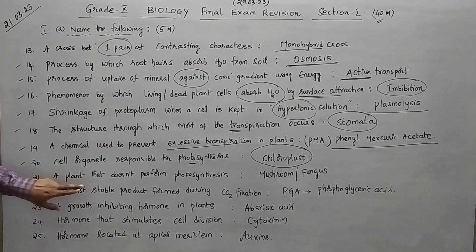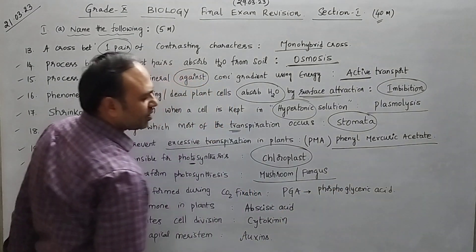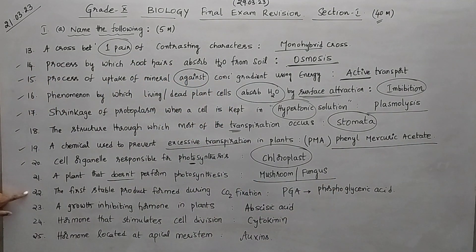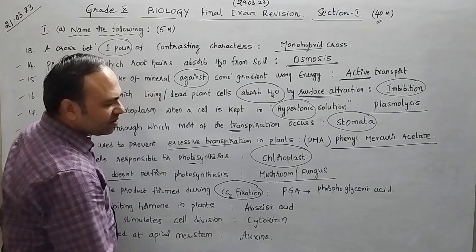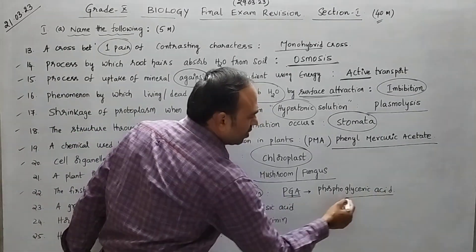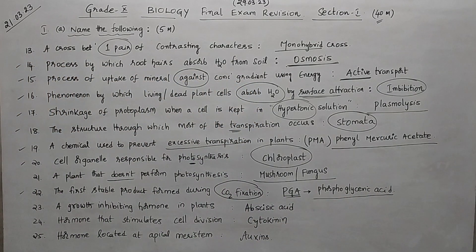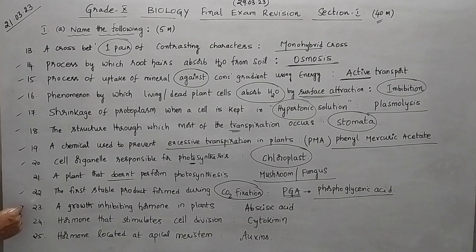Question 21: the plant that does not perform photosynthesis — mushroom or fungus can be taken as the example. Question 22: the first stable product formed during carbon dioxide fixation — that is PGA, expansion: phosphoglyceric acid. So phosphoglyceric acid is the first stable product formed during CO₂ fixation.